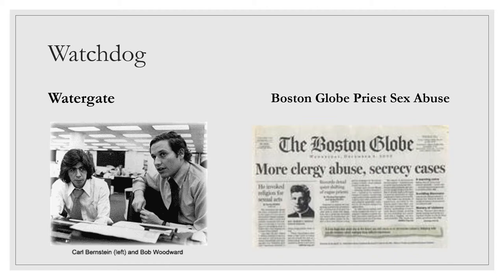The news media carries out their watchdog function when they practice what's called investigative journalism. This means that they're researching and publishing facts that political leaders or other prominent people are trying to hide. The most famous case of watchdog journalism happened in the 1970s when Carl Bernstein and Bob Woodward of The Washington Post found evidence that President Nixon was covering up his involvement in a crime. A more recent example was the investigation by several reporters from the Boston Globe into the cover-up practiced by the Catholic Church in Boston. Reporters discovered that the leaders of the church had been hiding evidence of priests sexually abusing children for decades. This is the watchdog function.